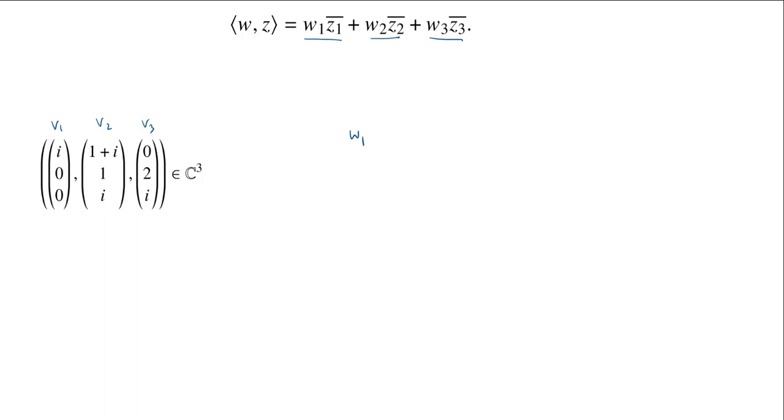When we do the Gram-Schmidt method, we're going to convert the Vs into Ws. These Ws are going to be an orthogonal basis. The first one is very easy: W1 equals V1, so W1 is just i, 0, 0. I'm going to make a list with W2 and W3 as well. V2 equals 1+i, 1, i. And V3 equals 0, 2, i.